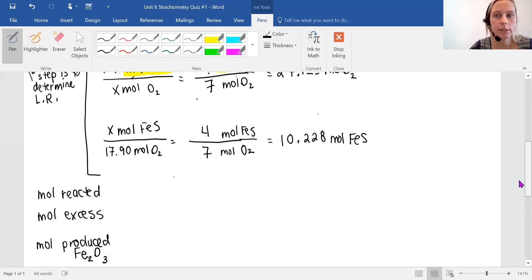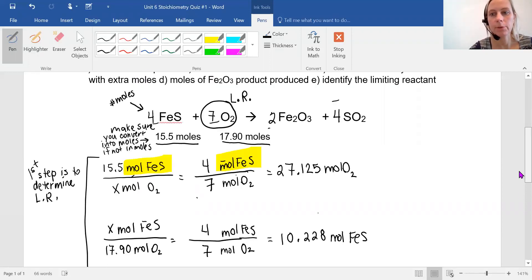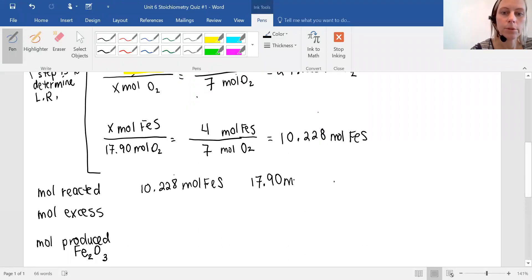All right. So moles reacted. You had 10.228 moles of FeS that reacted, but you had the entire 17.90 moles of oxygen reacted. So in excess, well, we used all of 17.90. So we have no excess of your oxygen. Your limiting reactant, you should never have any excess. It's not the case here.